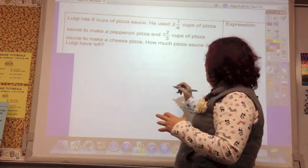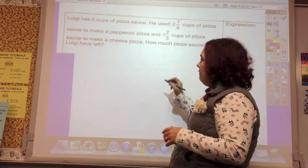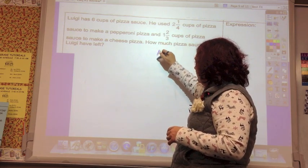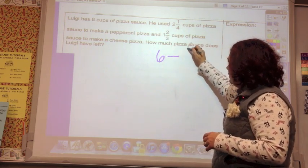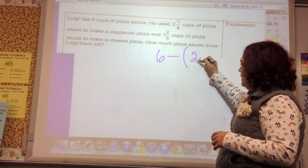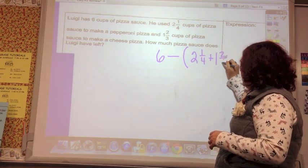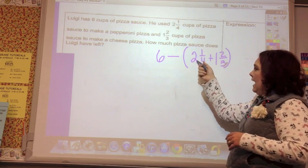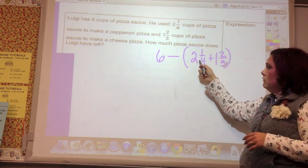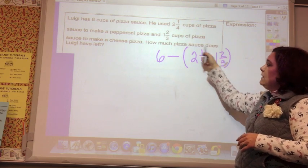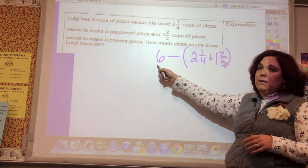So to write an expression for this, it would be six minus parentheses two and one-fourth plus one and two-thirds. Because I've got to add this pizza sauce. This was used for pepperoni, this was used for cheese, and that's got to come out of six.